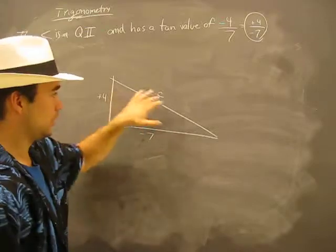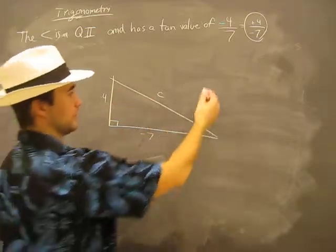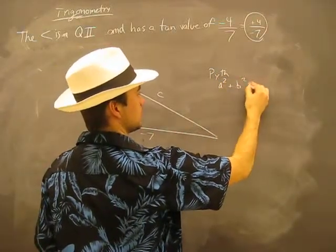We need all the values, all the sides in order to create a ratio. So first things first, we better find out what C is. Now, that's a good old Pythagorean: A squared plus B squared equals C squared. Pay attention to how I'm writing this linearly.